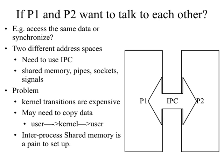If these multiple processes want to talk to each other — to exchange data or to synchronize — they need to use inter-process communication mechanisms such as shared memory, pipes, sockets, and signals. The problem with IPC mechanisms is that they are implemented through system calls, which means the operating system must switch from the first process to the second. There are kernel transitions, CPU scheduling, and context switching involved, which is very expensive.